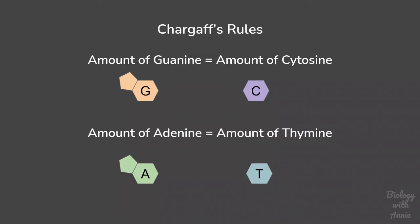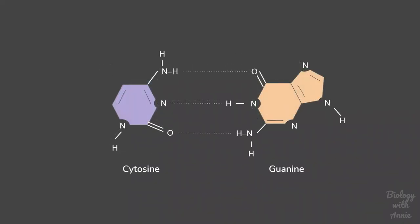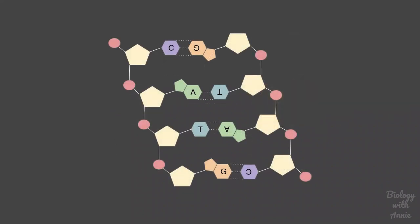They hypothesized that thymine pairs with adenine while cytosine pairs with guanine, and these pairs would be held together by hydrogen bonds. This arrangement ensured that the bases fit together perfectly. With this, Watson and Crick's model was complete.